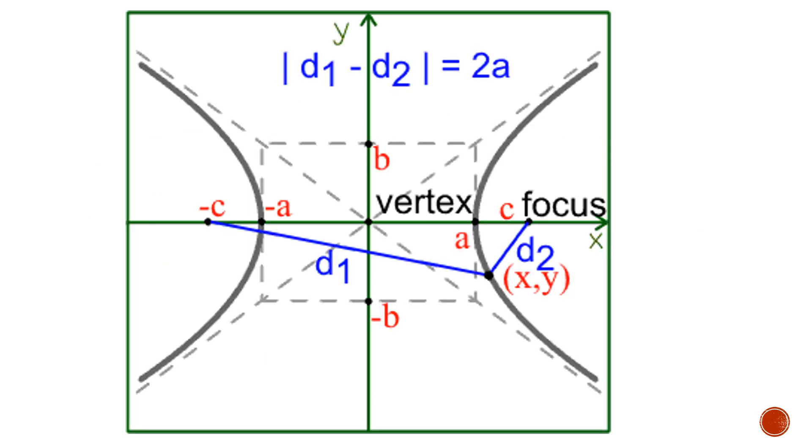Lastly, we have our fourth conic section, the hyperbola. The hyperbola is the collection of all points on a plane where the difference of the distances of the point from the two foci is constant. This distance d1 minus the distance d2's modulus is always constant, in our case equal to 2a. The only difference between an ellipse and a hyperbola is that in an ellipse, the sum of those distances is constant, while in a hyperbola, the difference is constant.